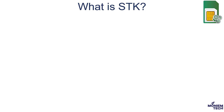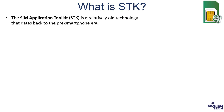Let's start with what is STK. As we know, most SIM cards released since the early 2000s, including eSIM, feature a carrier menu. This menu includes tasks such as balance checks, recharge, technical support, and more. All phones had it right on the main menu.